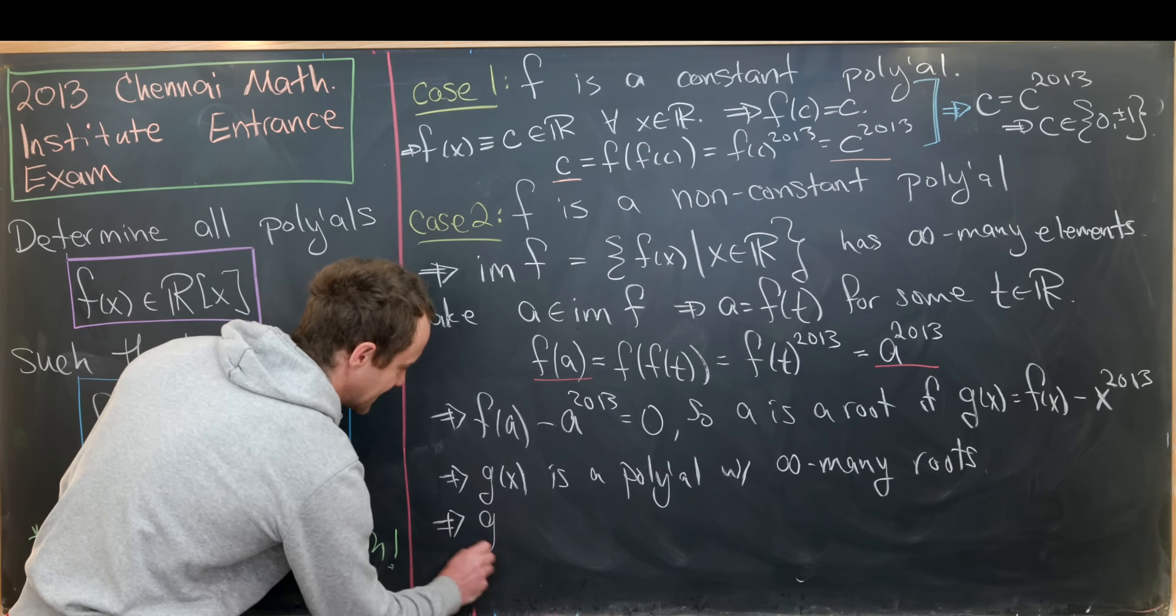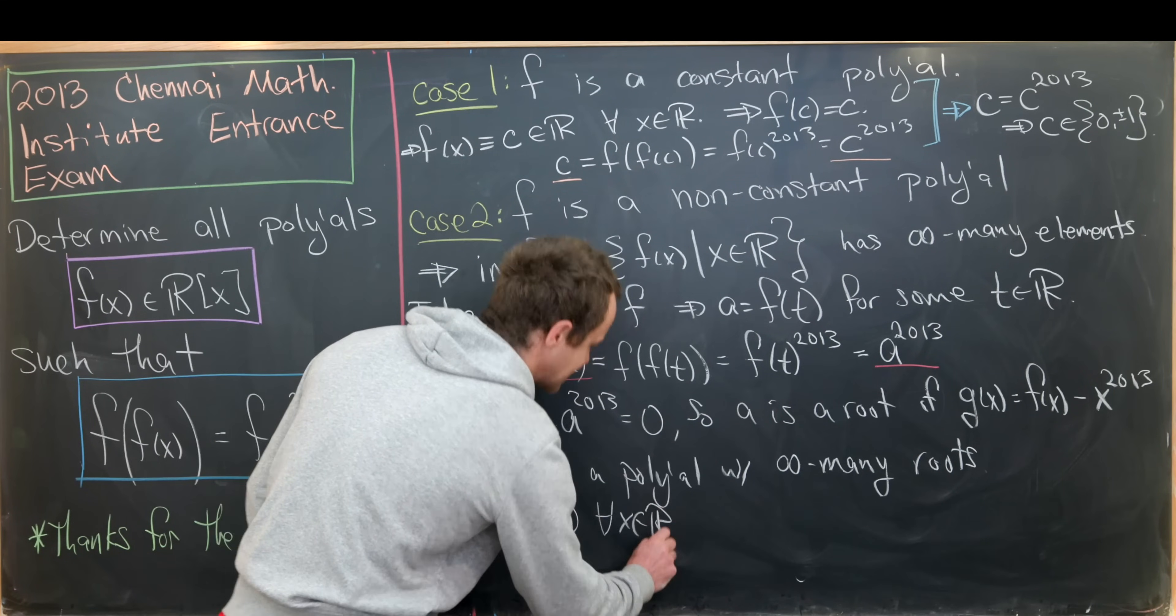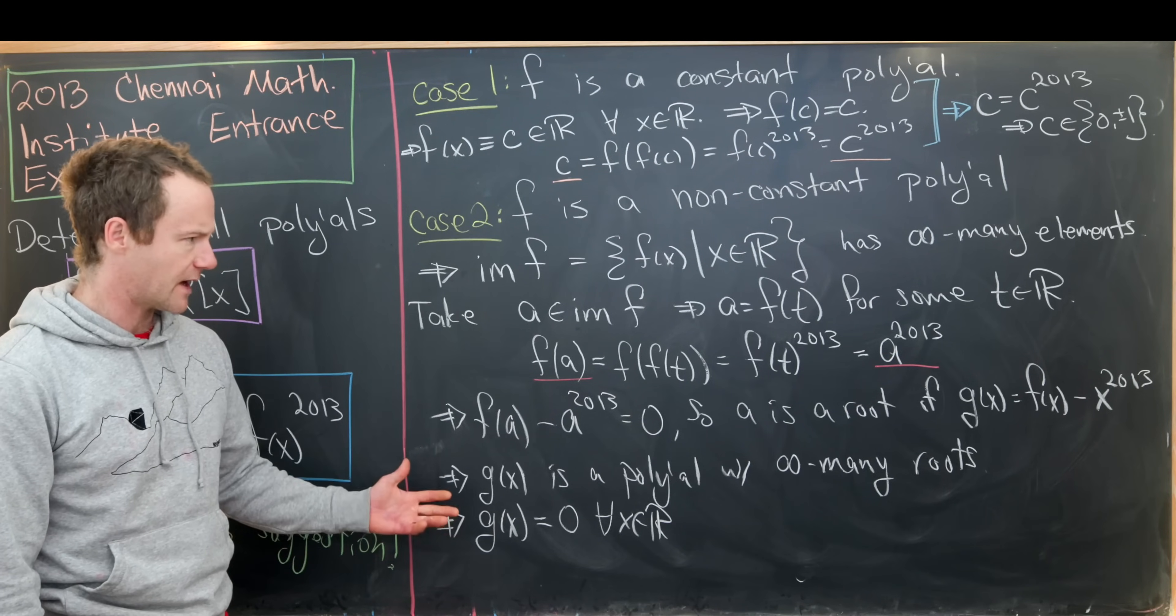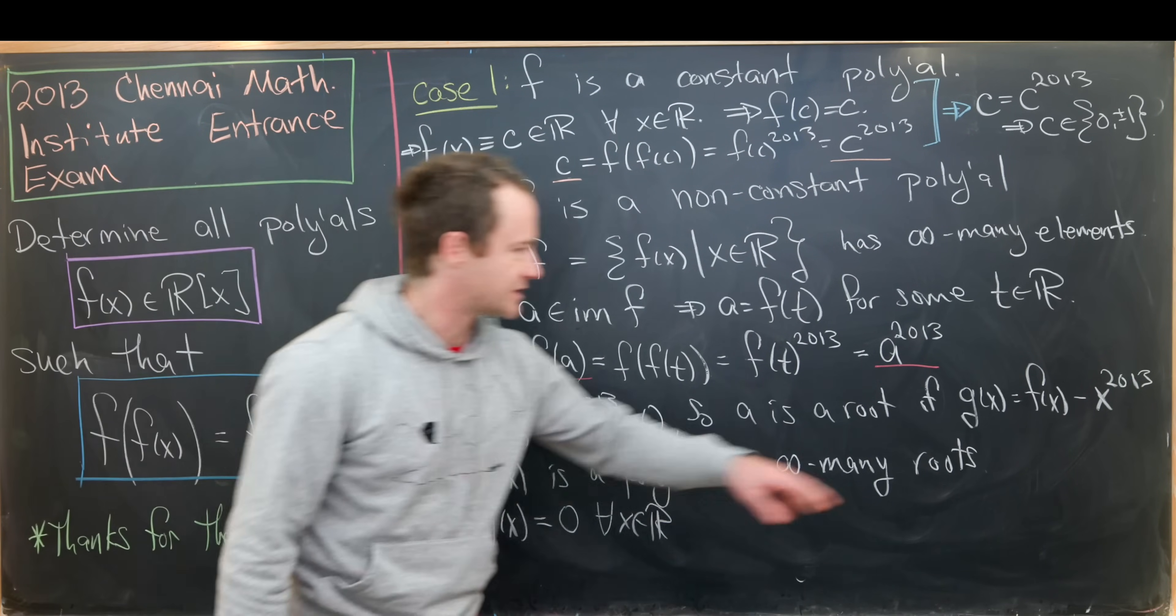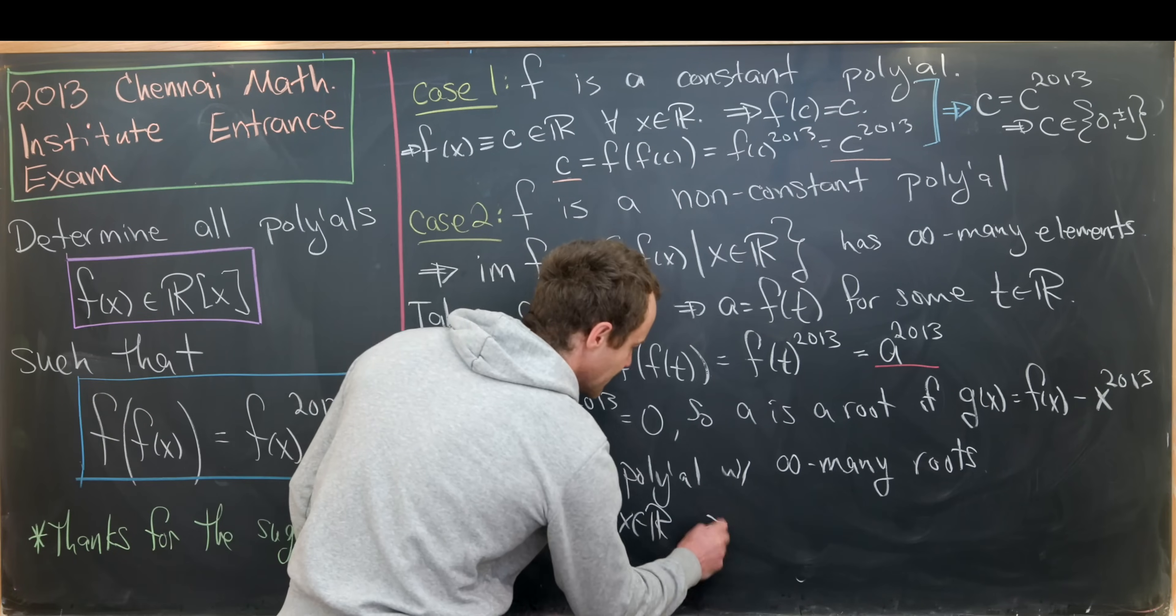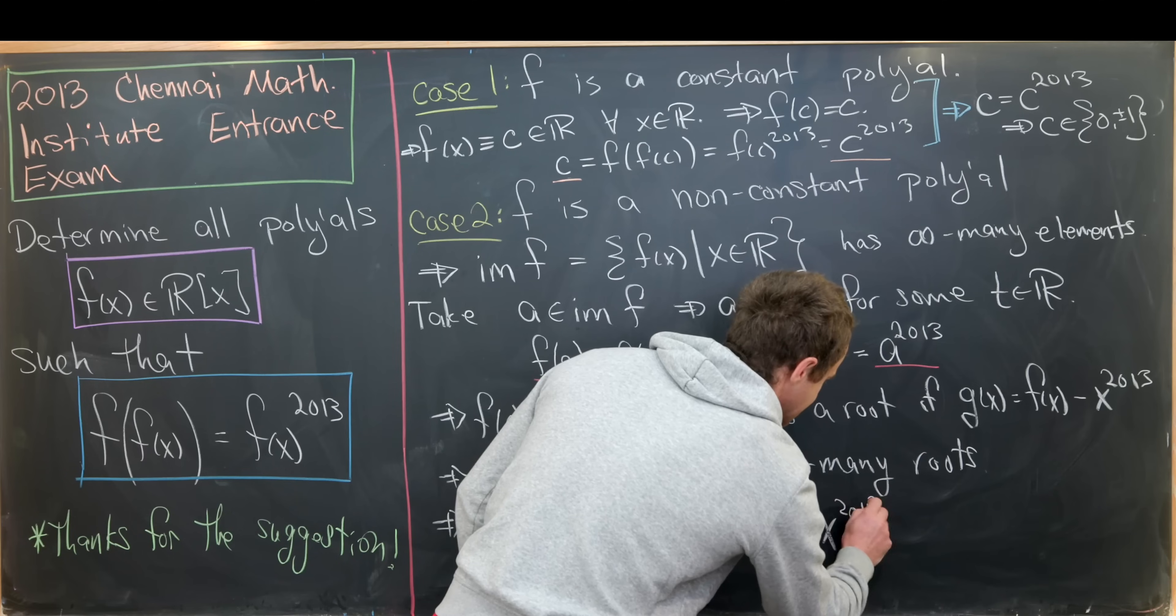So that tells us that g of x equals zero, and that's going to be true for all x in R. So it's the zero polynomial. But if g of x is equal to zero, keeping in mind the definition of g of x up here, we see that f of x is equal to x to the 2013.